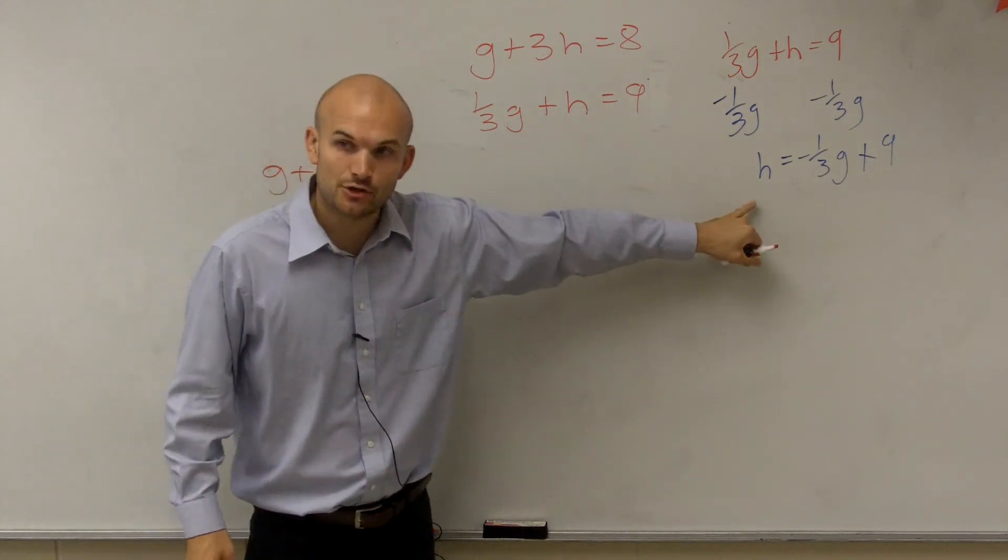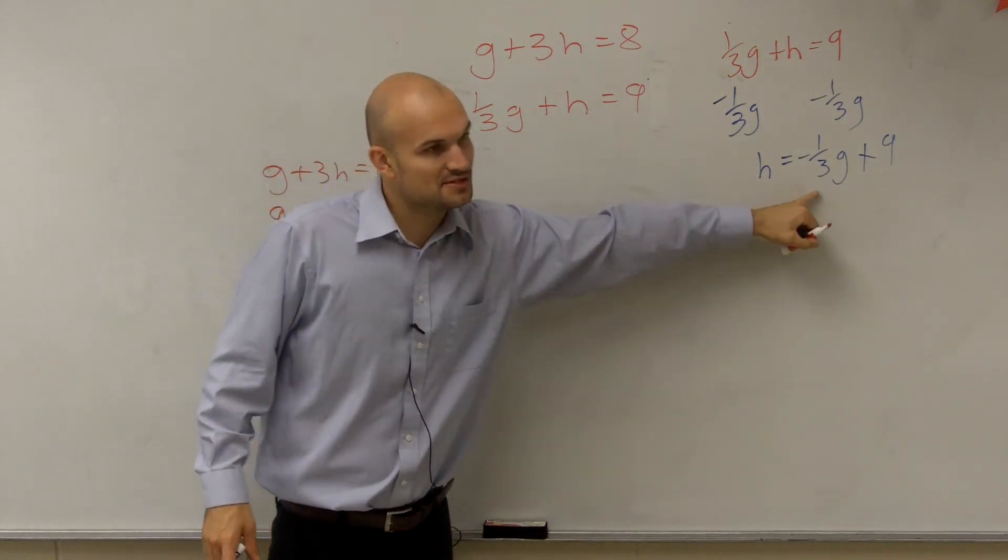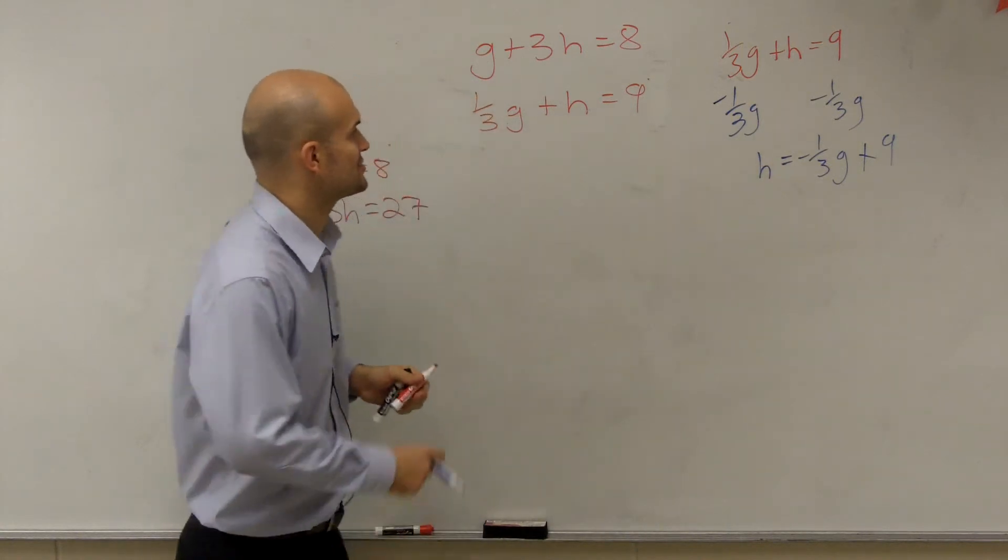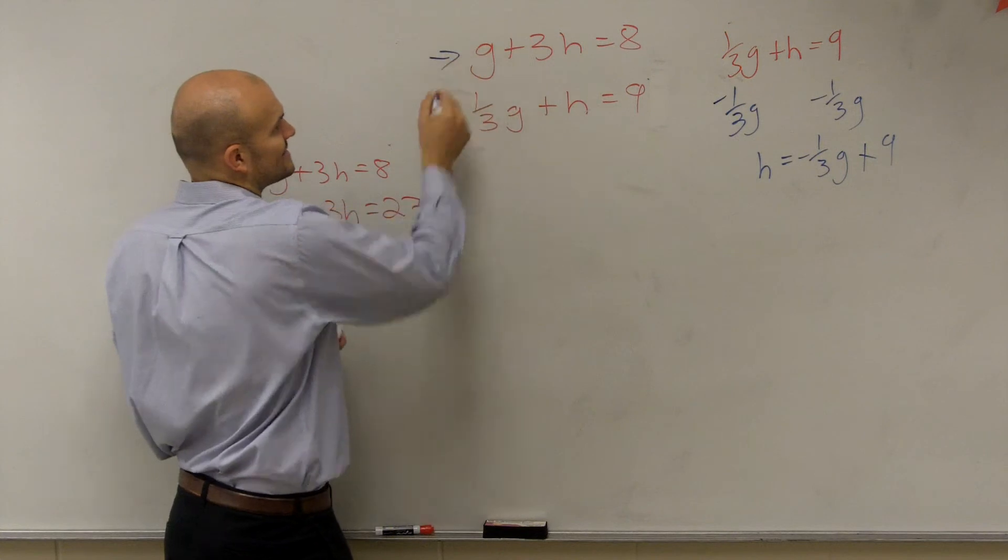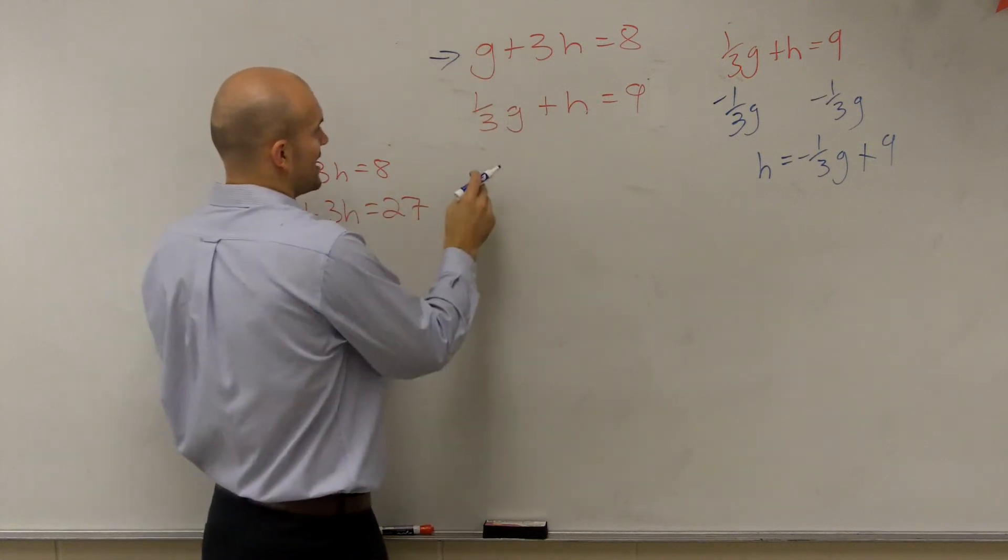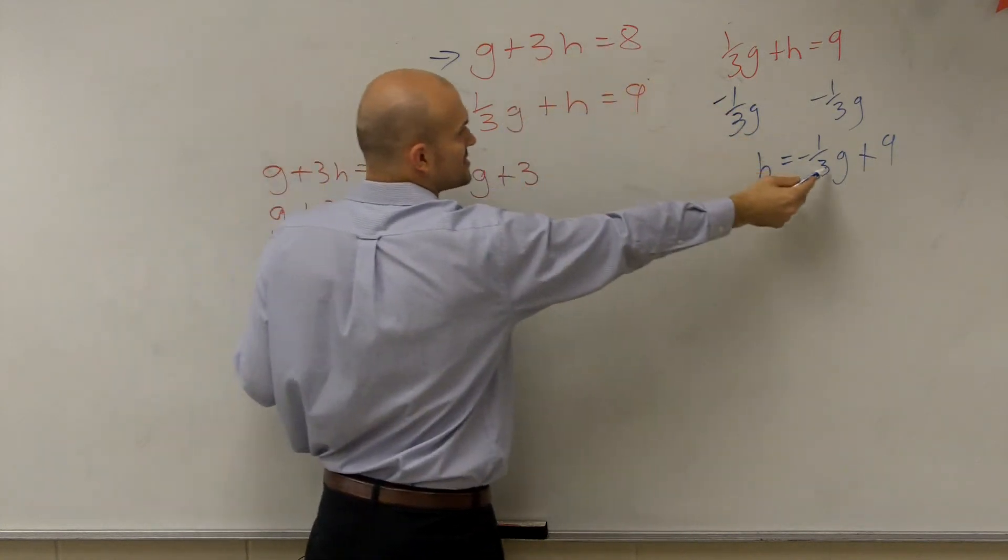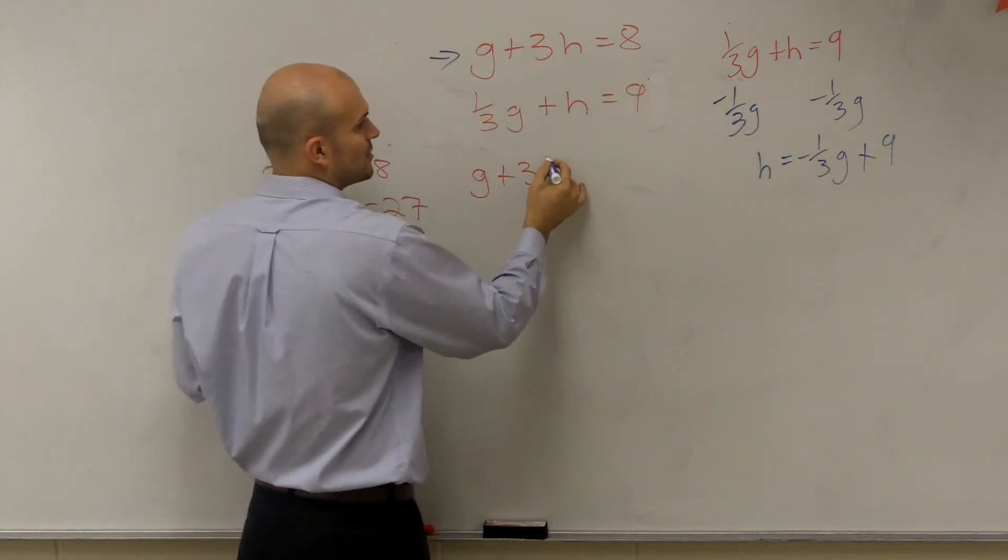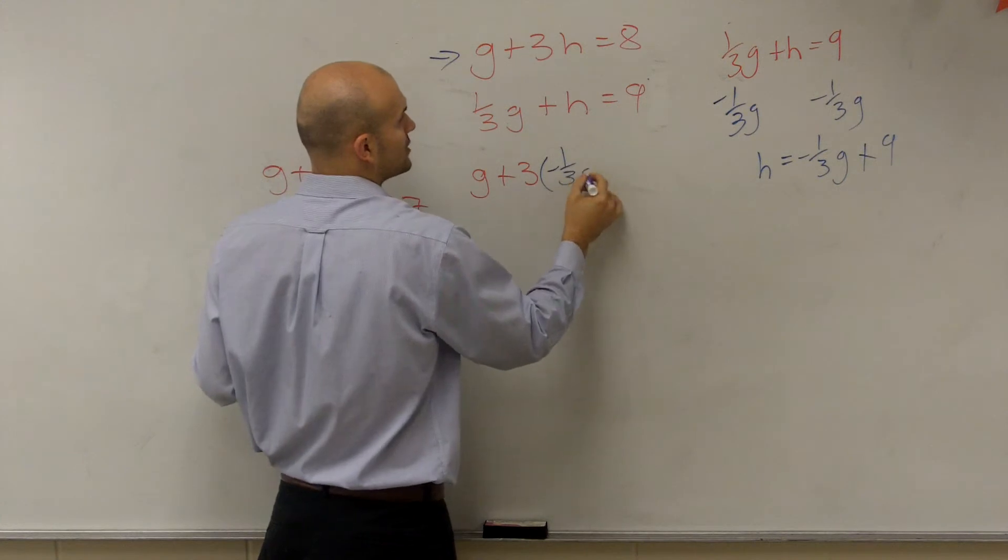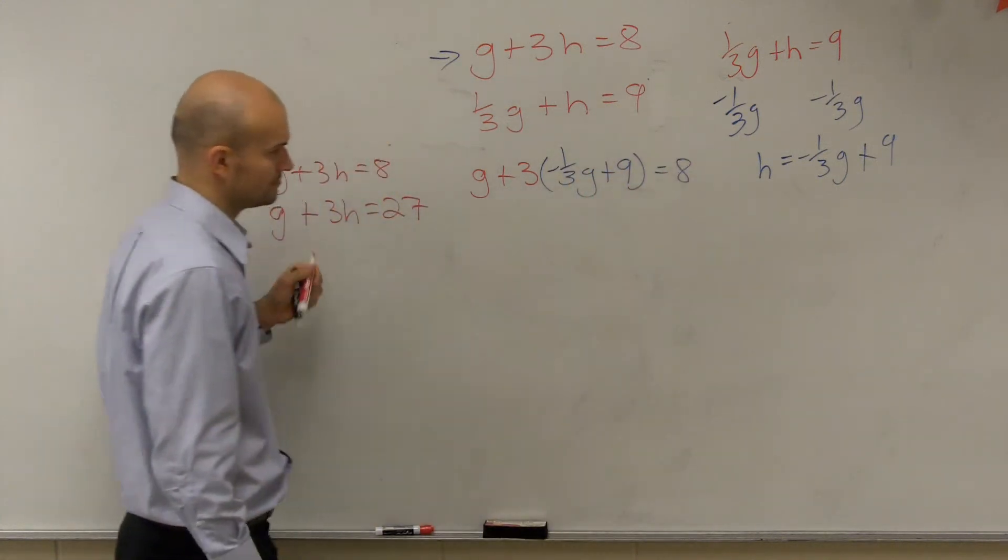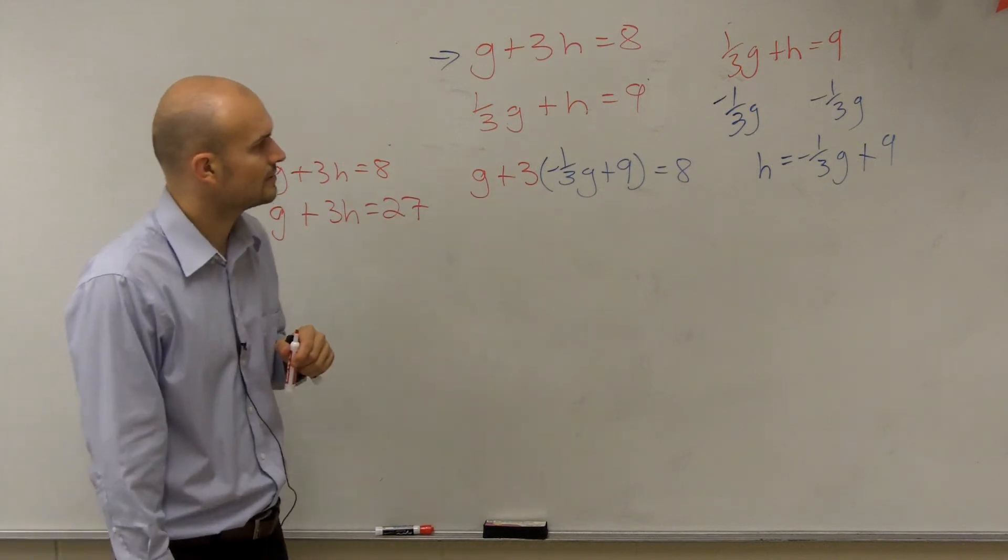So now, I'm going to take my value of h and I'm going to substitute the expression that's equal to h into my second equation, to my other equation. So I have g plus 3. And instead of multiplying by h, I'm going to substitute in my value of h, which is negative 1/3 g plus 9 equals 8.